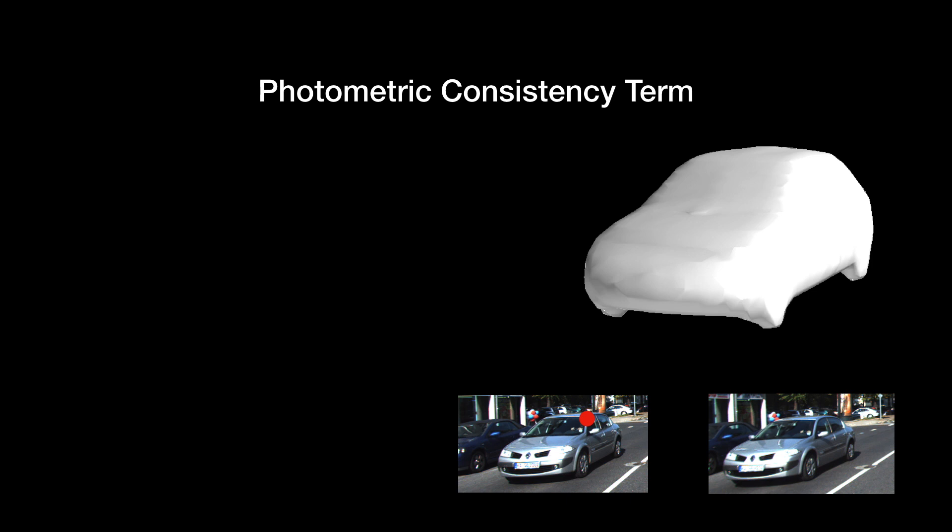Starting from a pixel in the left image, we look for its corresponding 3D point by searching along the ray. Based on the current object pose and shape, the intersection point can be found by ray casting. The 3D point can then be projected to the right image.